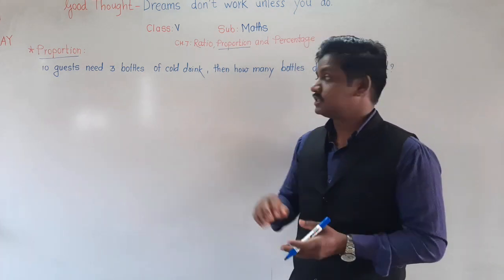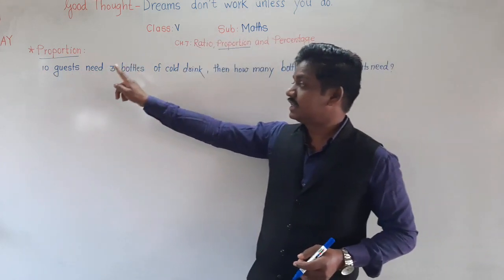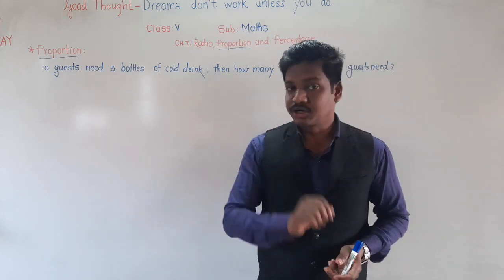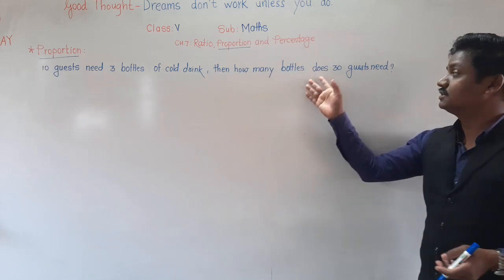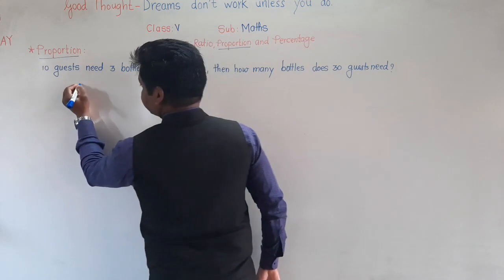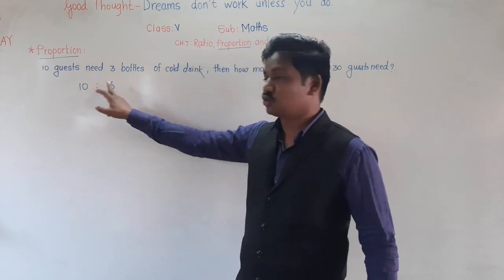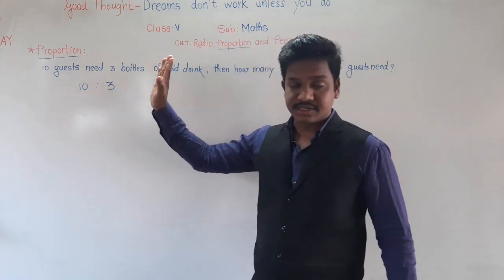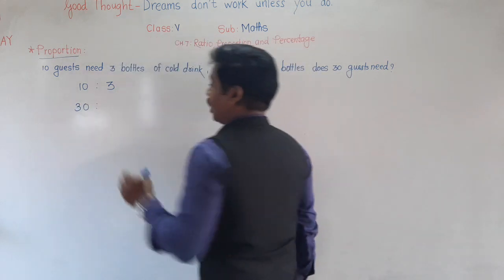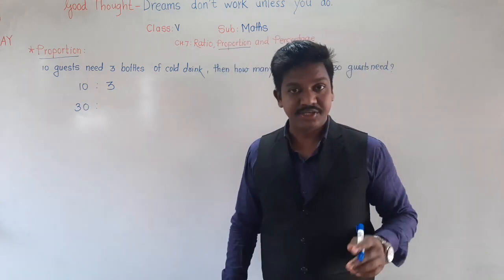See here on the board, I have written one example. 10 guests need 3 bottles of cold drink. Then how many bottles do 30 guests need? There are 10 guests, they need 3 bottles of cold drink, so the ratio is 10 is to 3. If there are 30 guests, then how many bottles are required? Can you guess?